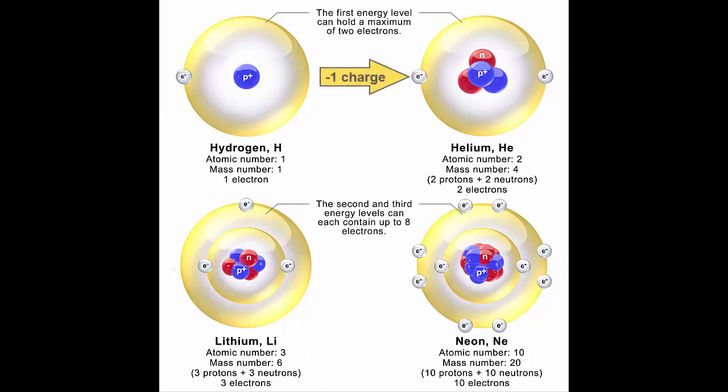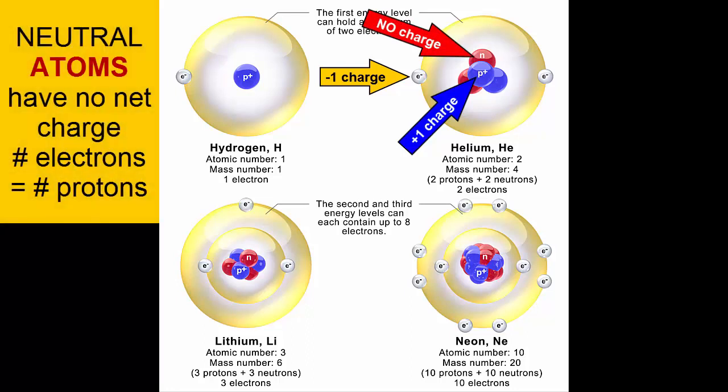Remember, electrons have a negative one charge, and protons a positive one charge. Neutrons have no charge. As long as the number of electrons and protons in an atom or molecule are equal, that atom or molecule has no net charge.